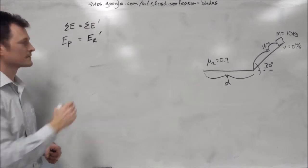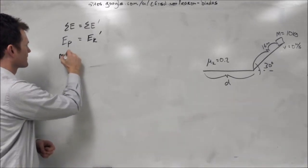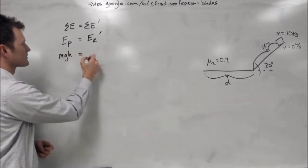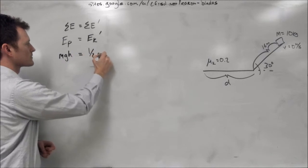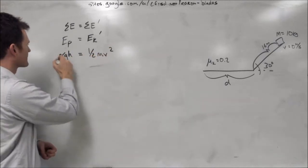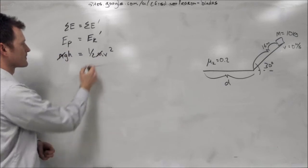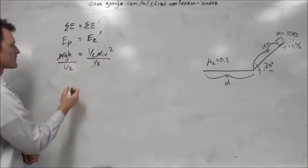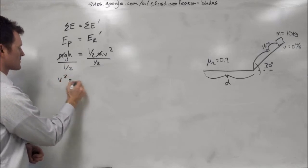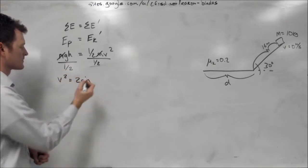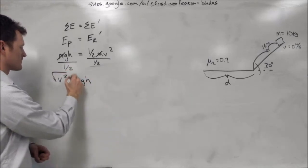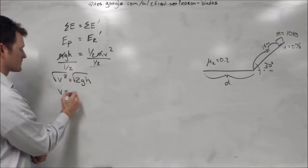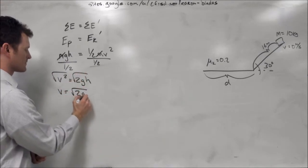Now based on the situation we are in, we can write our formulas for kinetic and potential energy. Mgh for potential, and one half mv squared for kinetic. The m's on both sides cancel out, and if we divide both sides by one half, we end up with 2gh equals v squared. Now if we square root both sides, we end up with v equals the square root of 2gh.